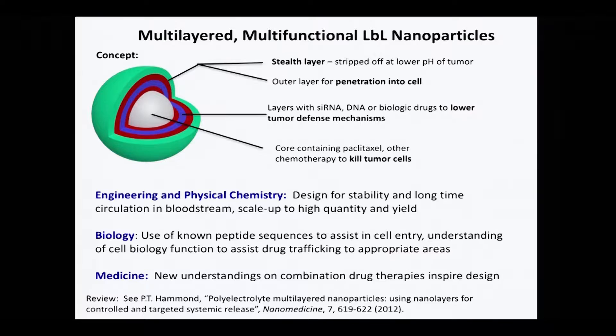In doing all of this, we require several different kinds of science. We need to engage engineers and physical chemists. We have to get to know our biologist friends at the Koch Institute very well, because they understand what targets we want to work on. And we also have to get close to clinicians and understand how we can address the disease more broadly.